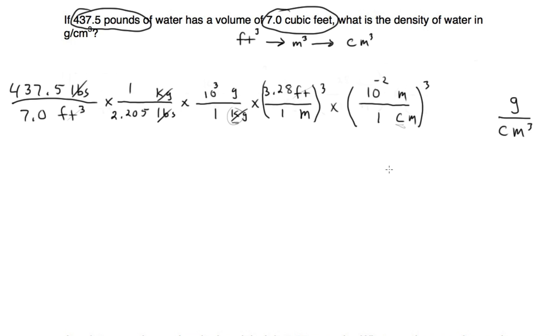Okay, now we're going to take 437.5 divided by 7 divided by 2.205 times 10 to the third. This might be a little tricky. If you want to go ahead and cube it ahead of time, it comes out to 35.3 if you cube that. And then 10 to the minus 2 cubed is 10 to the minus 6.